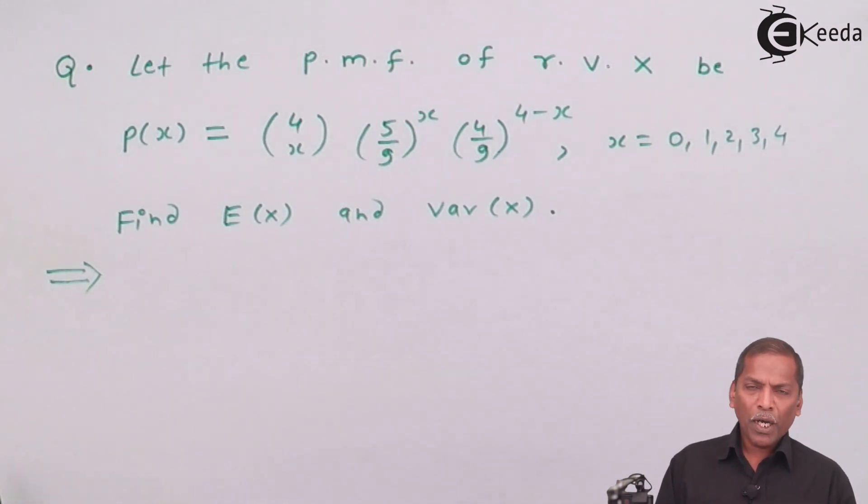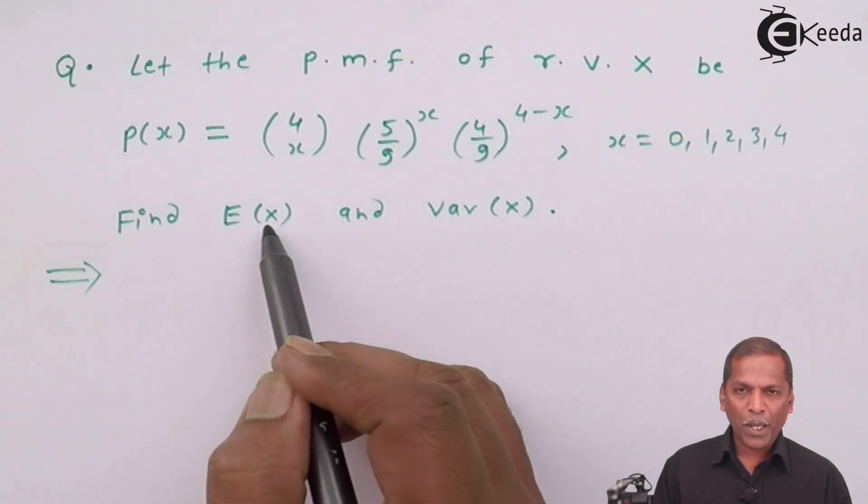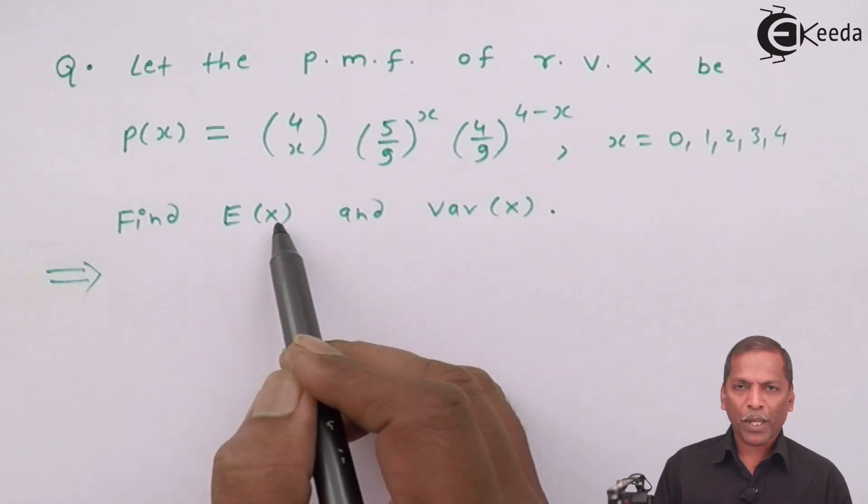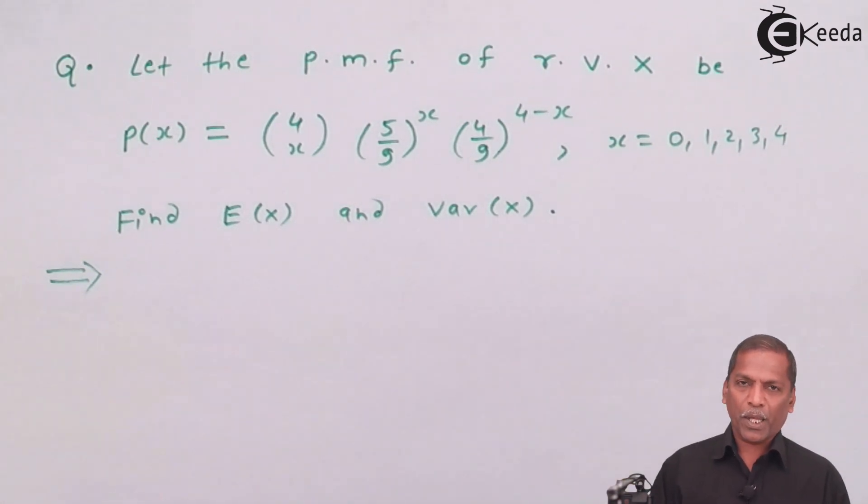Now, here we have to find E(X), that is expected value of X, that is mean, and variance of X.